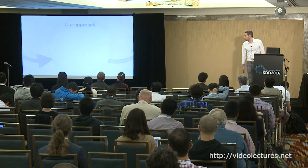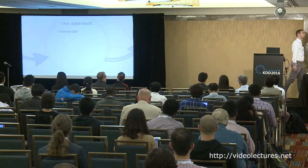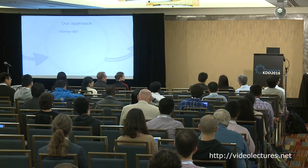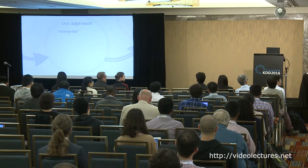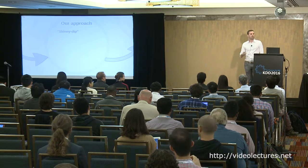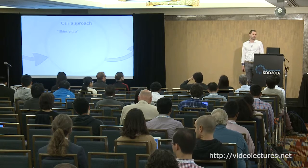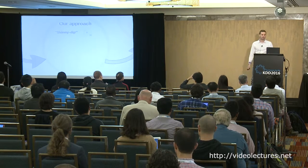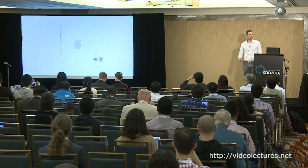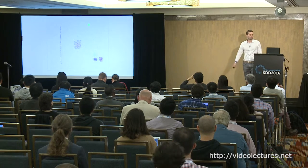So what do we propose? SkinnyDip. In addition to being a nice marketing name, there is some sense to it. We're skinny in the sense of relying on few assumptions, having no obscure parameters, and being efficient and agile with quite competitive runtime complexity. And this is the result that SkinnyDip gives us — it's able to extract all six clusters and assign the remaining points to a noise bucket, which is much more in tune with the kind of result we're looking for.